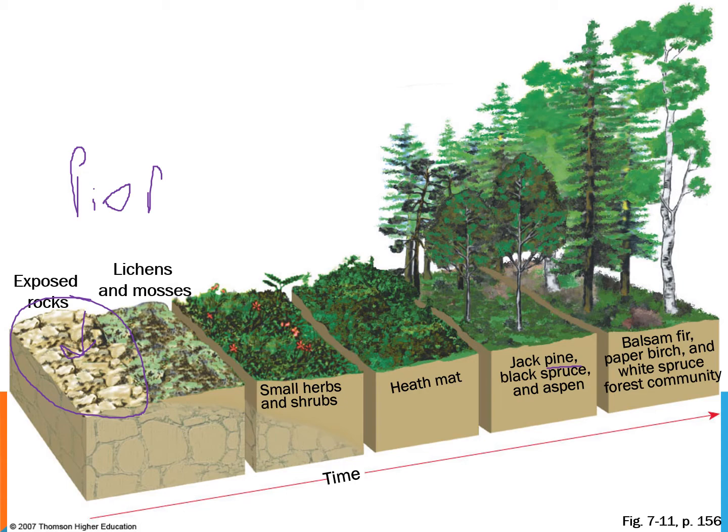They're called pioneer species. They're hardy enough to survive, and they do things to the rock — maybe breaking it up a little, excreting chemicals that start to break it up. When they die and decompose, they add nutrients to the rock, starting to form a basic soil. Now if seeds of shrubs and grasses blow in they can take root, gain a foothold, and they might even shade out the lichens. Grasses with nitrogen-fixing bacteria on their roots add nitrogen to the soil, and their roots trap water, making the soil more moisture-rich.